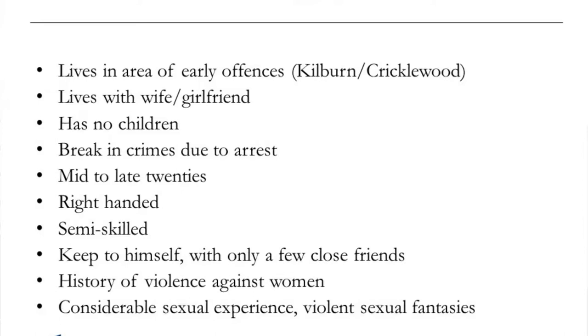It turned out that many of the characteristics Canter expected the offender to have were quite accurate, although there were a few he failed to correctly identify. The perpetrator lived in the Kilburn area, which was where the early offences had occurred, and was aged in his 20s as predicted. Duffy was also married at the time but had recently separated from his wife, and was found to be infertile — so no children, as predicted. He was also arrested briefly in 1983 for violence. The profile led police to narrow down the suspect pool and focus on Duffy, who already had a police record for having raped his estranged wife at knifepoint. Lastly, he was a right-handed individual.